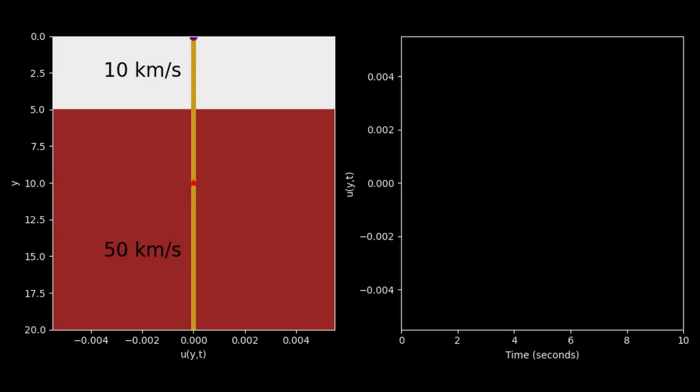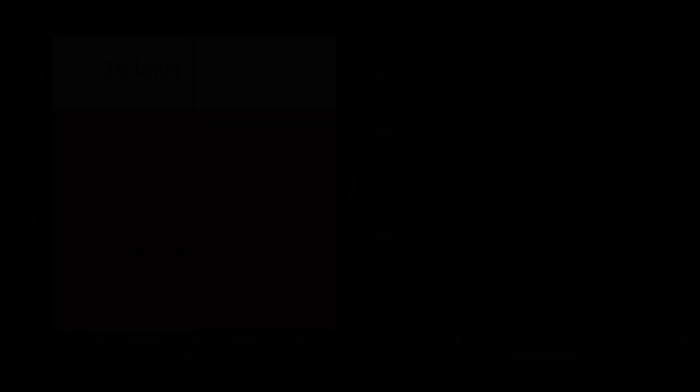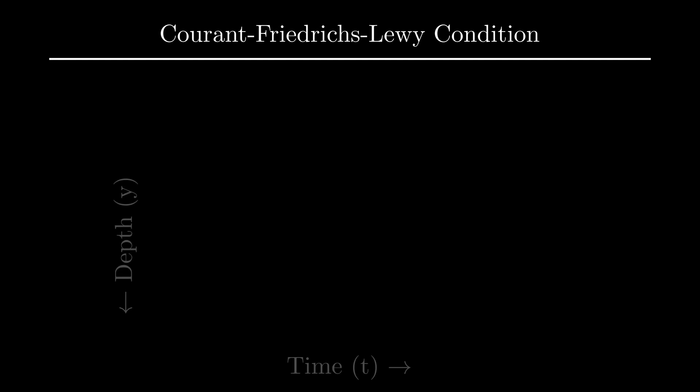I ran a few examples involving different medium velocities, and found that the simulation failed for higher medium velocities. Why did this happen? I got an answer to this when I found something known as the CFL condition. I won't go into deep mathematics, but will explain it intuitively.